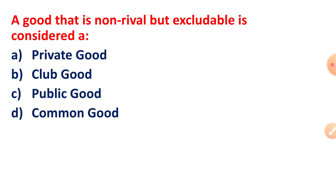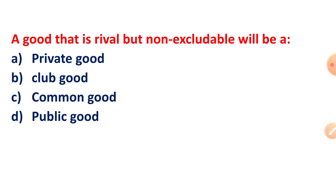A good that is non-rival but excludable is considered a club good. The right answer is: non-rival but excludable is a club good.